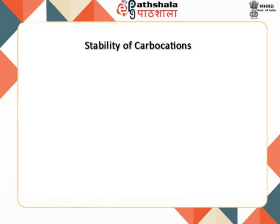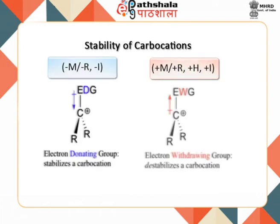The stability of a carbocation is decided by the nature of the groups attached to it. The groups attached to the carbon having positive charge may be electron donating or electron withdrawing. If the groups are electron releasing, they will decrease the intensity of the positive charge on carbon, hence making it more stable. If the groups are electron withdrawing, they will increase the intensity of positive charge, thus destabilizing it. The more are the number of such groups, the higher are the corresponding effects.